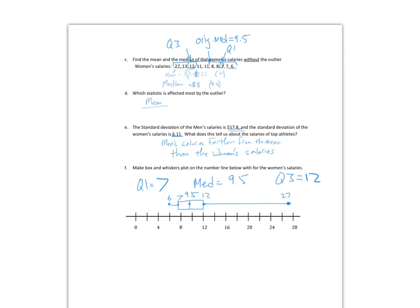For the test, be ready to find mean, median, mode, and range; be ready to talk about an outlier; be ready to make a box plot; and be ready to make a histogram. Remember, a histogram or dot plot can tell us if data is normal — a normal distribution should be a bell-shaped curve, nice and balanced. Study hard, and if you have questions come ask.